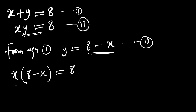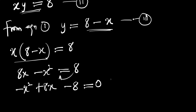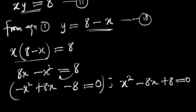Let's expand this. We are going to have 8x minus x squared, and this equals 8. So we can rearrange it. We are going to have negative x squared plus 8x minus 8 equals 0. Let's multiply everything by negative 1. We are going to have x squared minus 8x plus 8 equals 0.